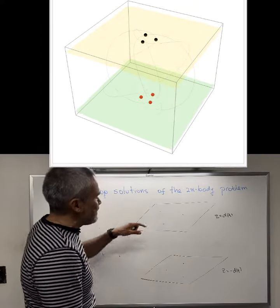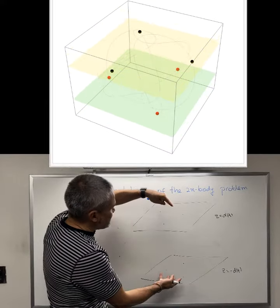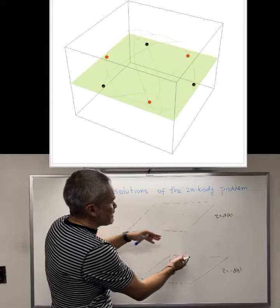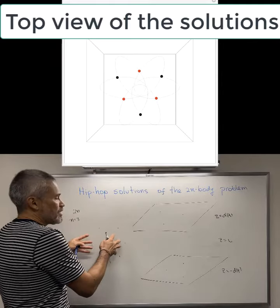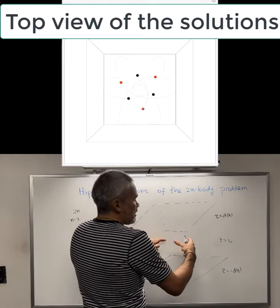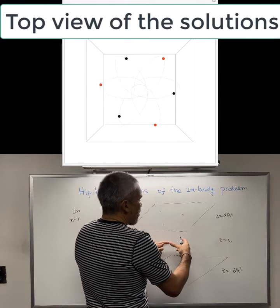And at every t, if we project all the bodies into the plane z equals zero, we will get a configuration like this. We will get a regular polygon.